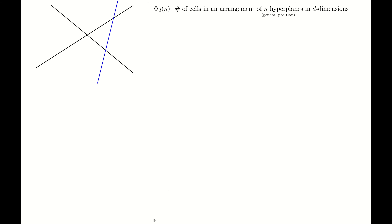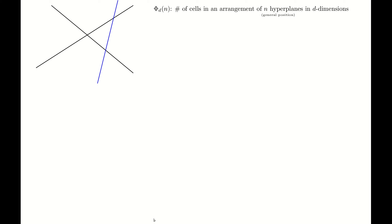So given these definitions, the first thing we'd like to prove relates to the number of cells created in an arrangement of n hyperplanes in d dimensions. For now, I'm going to assume general position. This means every two hyperplanes intersect — there are no parallel hyperplanes — and there are no d+2 hyperplanes that intersect as a vertex, or d+1 hyperplanes that intersect as an edge, and so forth. In such an arrangement, the first claim is that in two dimensions, if you have n lines in general position, they will create n(n+1)/2 + 1 regions or cells.